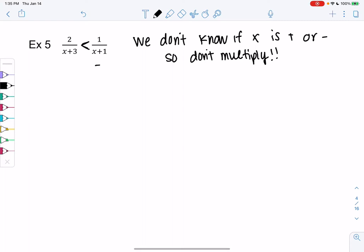So we're going to subtract 1 over x plus 1, as weird as that is. That's going to make the right side 0. So we have 2 over x plus 3 minus 1 over x plus 1 is less than 0. So one side is 0, that's our goal.